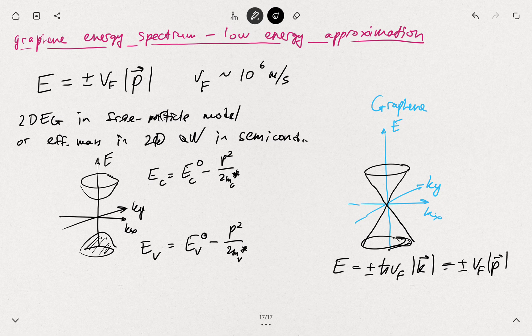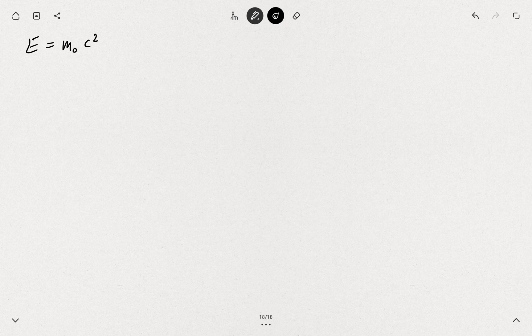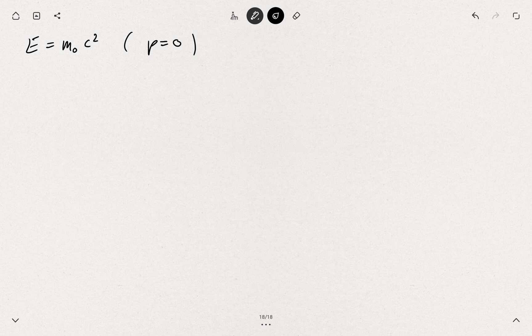That's where the ideas of relativistic particles come from. If you look at Einstein's equation, we have this famous E = m₀c², but that's for the particle at rest, so the momentum was zero.